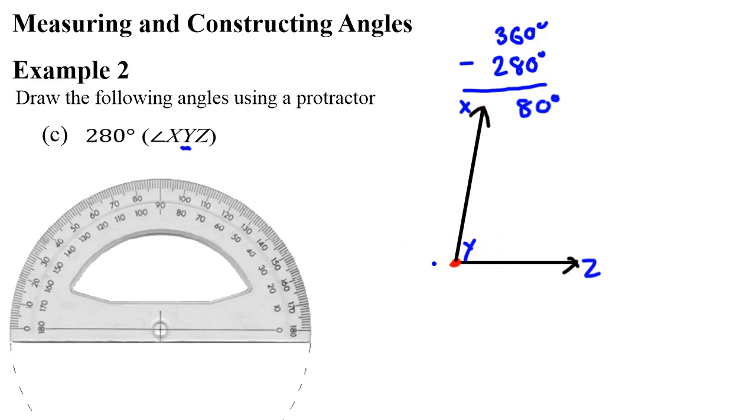We've measured 80 degrees. So, this angle here is 80 degrees. When really, we wanted an angle of 280 degrees. So, what does that mean? Well, this angle on the outside is our 280 degree angle there.